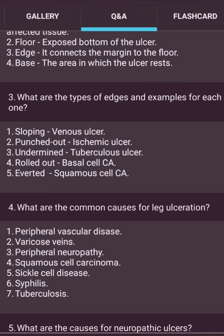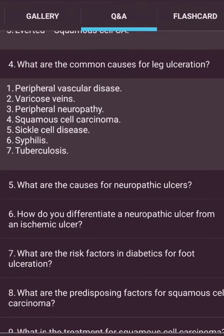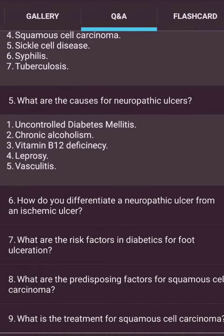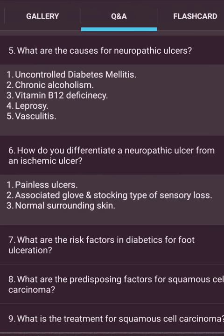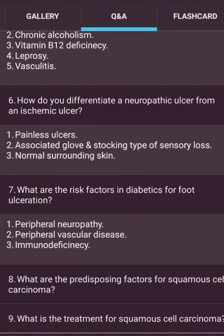Common causes for leg ulceration: peripheral vascular disease, varicose veins, peripheral neuropathy, squamous cell carcinoma, sickle cell disease, syphilis, and tuberculosis. Causes of neuropathic ulcer: uncontrolled diabetes mellitus, chronic alcoholism, vitamin B12 deficiency, and peripheral vascular disease. How do you differentiate a neuropathic ulcer from an ischemic ulcer? A neuropathic ulcer is painless, associated with glove-and-stocking type sensory loss, and the surrounding skin is normal.